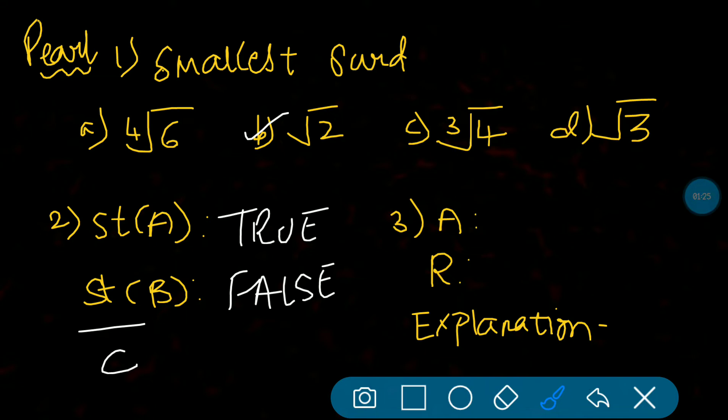Third question, assertion and reason type. Assertion: Cube root of 4 is greater than cube root of 3. That is correct, it's true. Here it is very simple - cube root of 4 and cube root of 3, which is the bigger number? Obviously 4 is the bigger number, that's it.